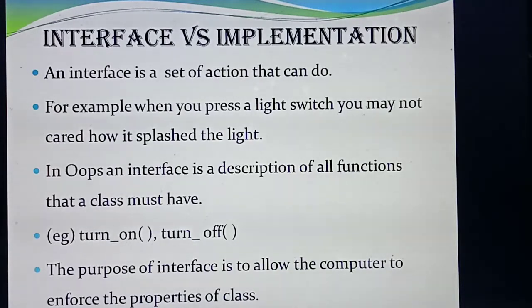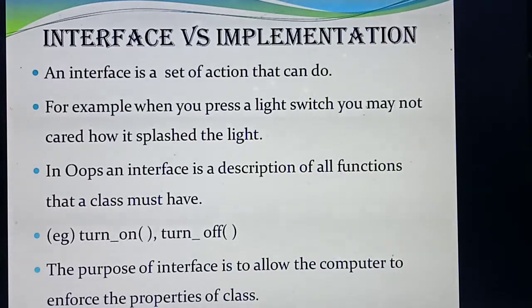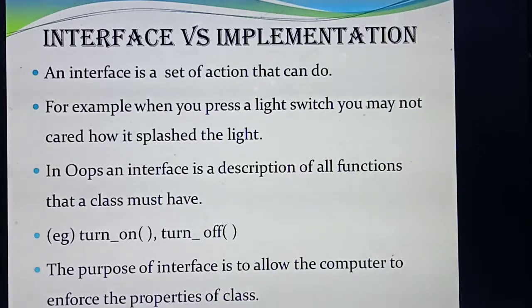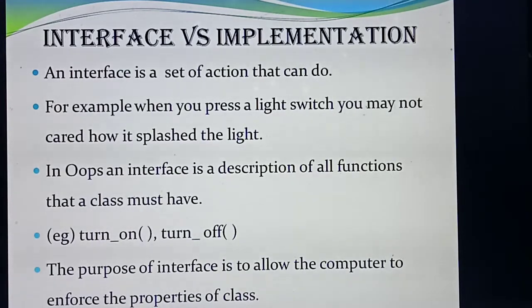Interface will give or explain the set of actions, or what the object can do. But it will not explain how it will do it. For example, if a light is there, it will explain only the working of the light — that the light will flash. But it will not explain the internal working of the light. For example, if you are buying a new washing machine or any electronic item, they will give one manual or guide with instructions on how to operate the machine.